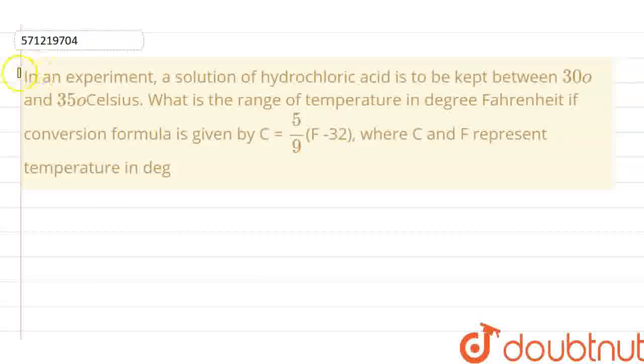Hello everyone, today we are going to solve the question. The question states that in an experiment, a solution of hydrochloric acid is to be kept between 30 degree and 35 degree Celsius. What is the range of temperature in degree Fahrenheit if conversion formula is given by C equals 5 by 9 into F minus 32, where C and F represent temperature in degree.